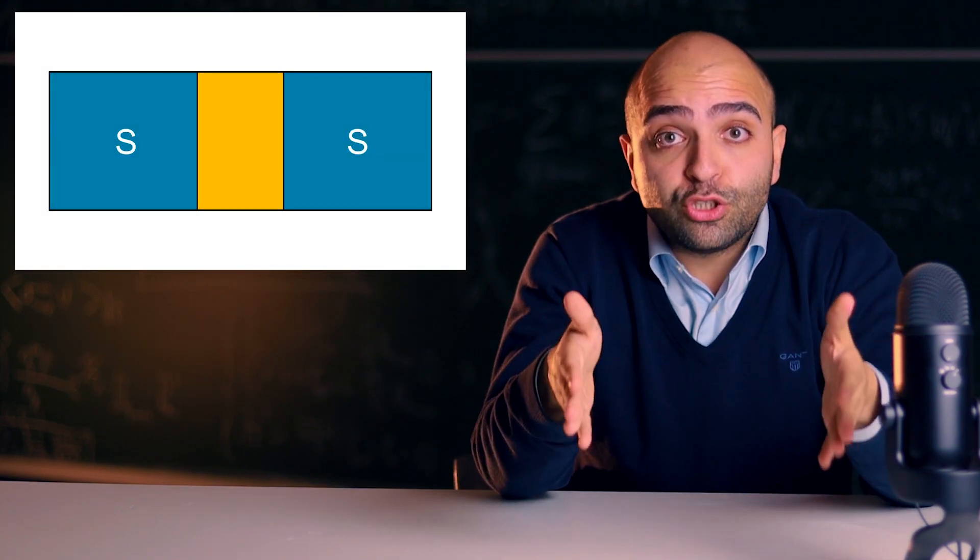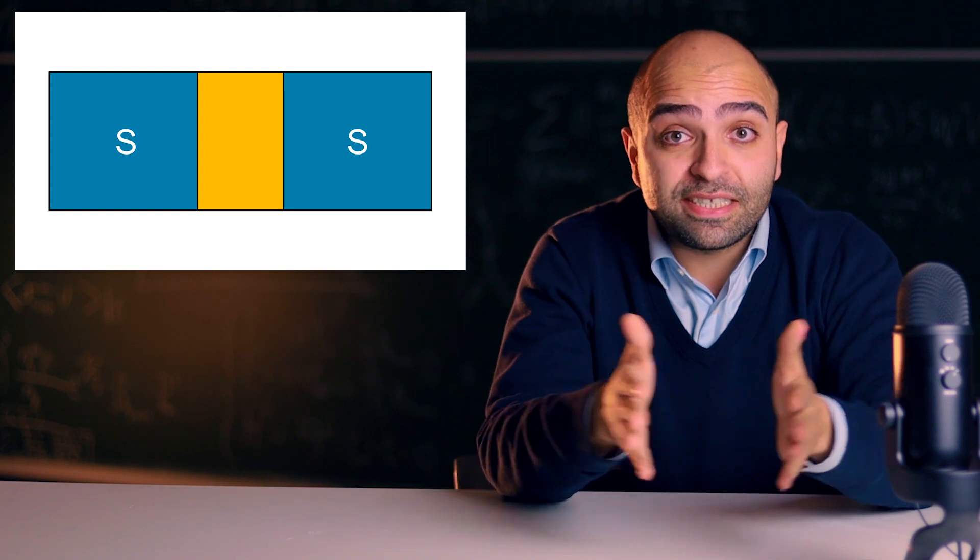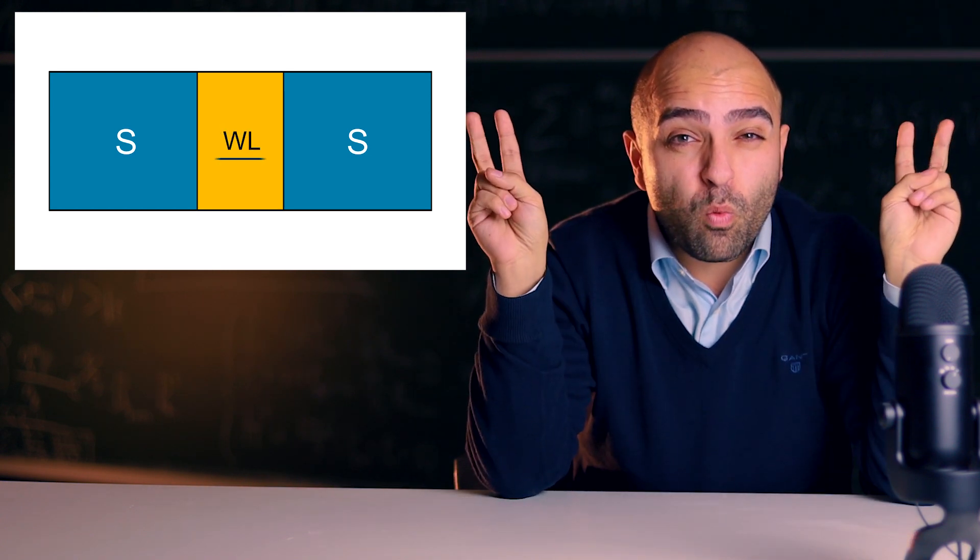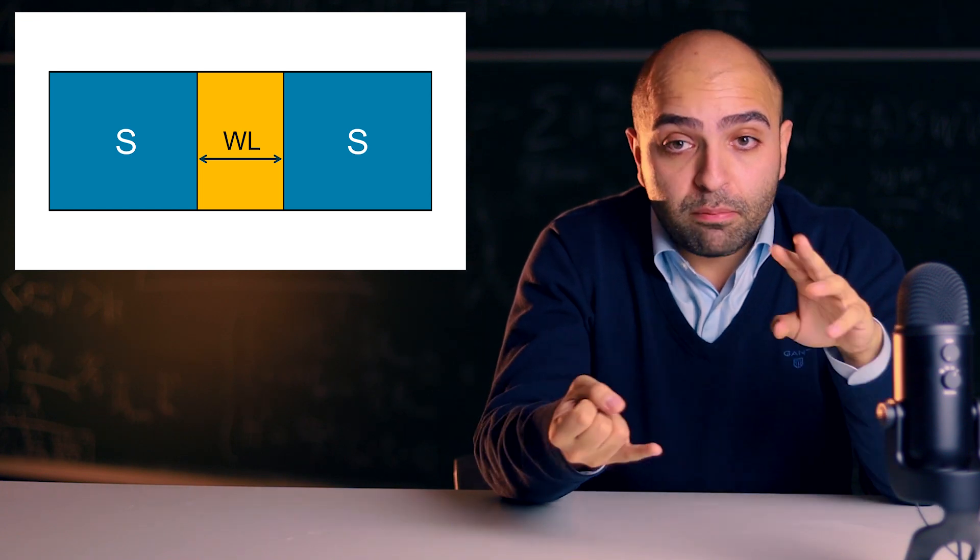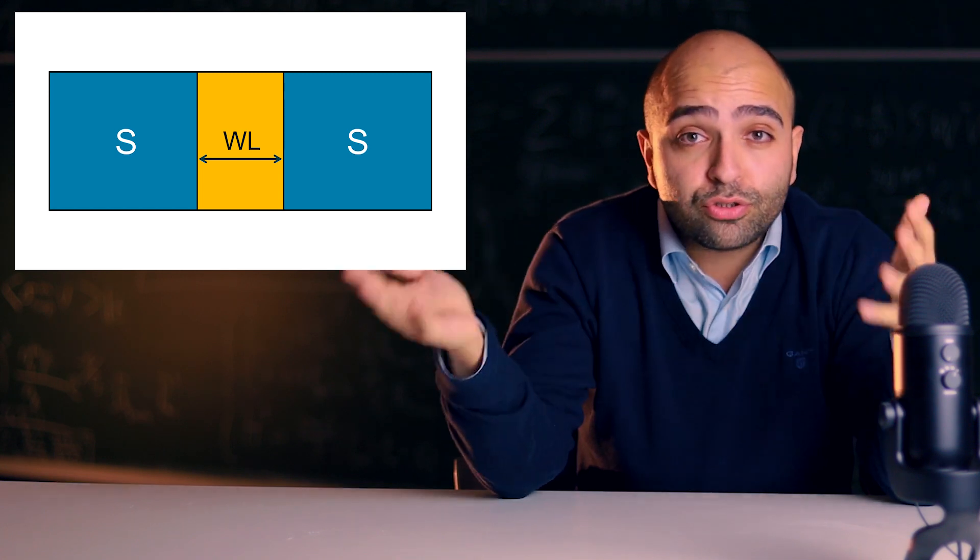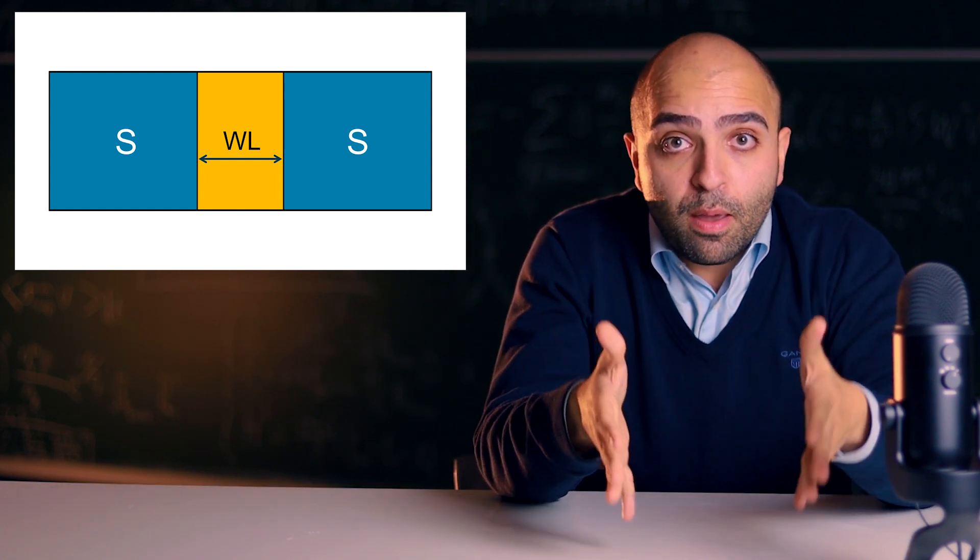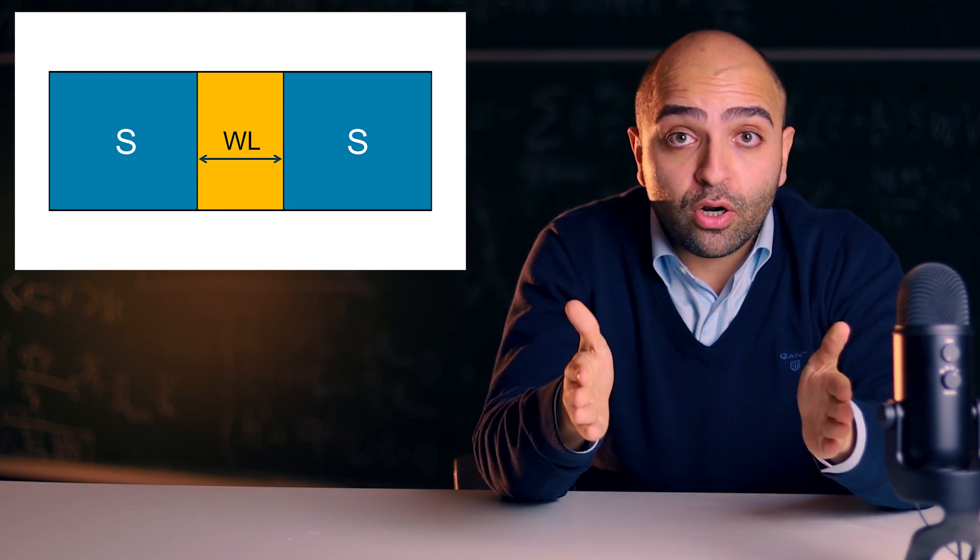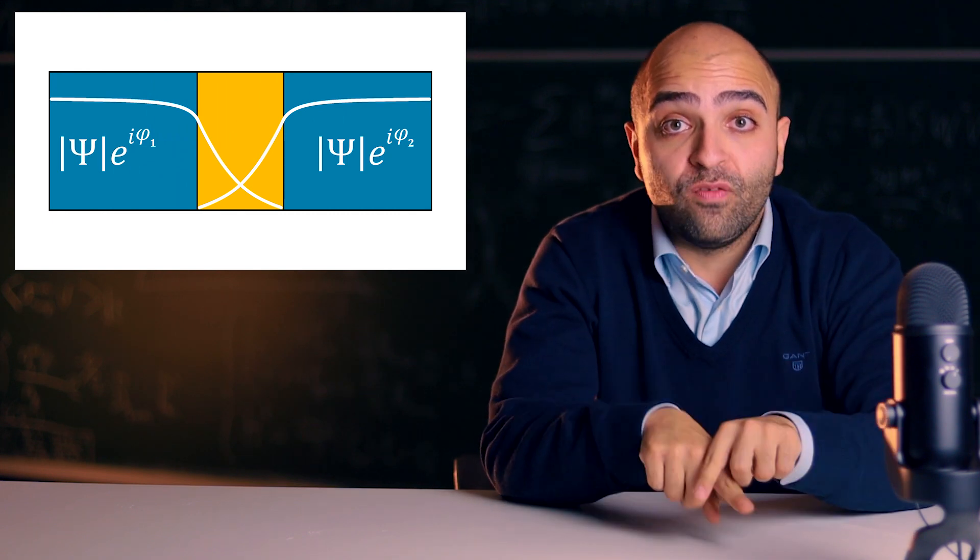To put it simply, a Josephson Junction is when you have two superconductors that are separated by some form of weak link. Now this weak link can be many things. It can be a normal metal, it could be an insulating barrier or constriction. What is crucial is that the weak link must be able to couple the two superconductors together by allowing their wave functions to overlap.